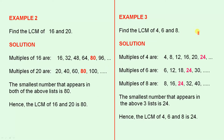Example 3. Find the LCM of 4, 6 and 8. Solution. The multiples of 4 are these numbers. The multiples of 6 are those numbers. And the multiples of 8 are those numbers. The smallest number that appears in the above 3 lists is 24. Hence the LCM of 4, 6 and 8 is 24.